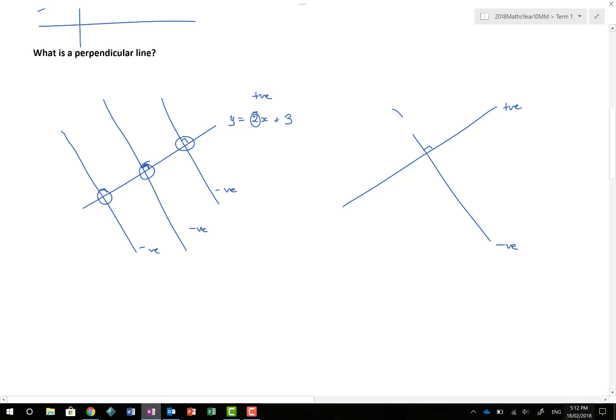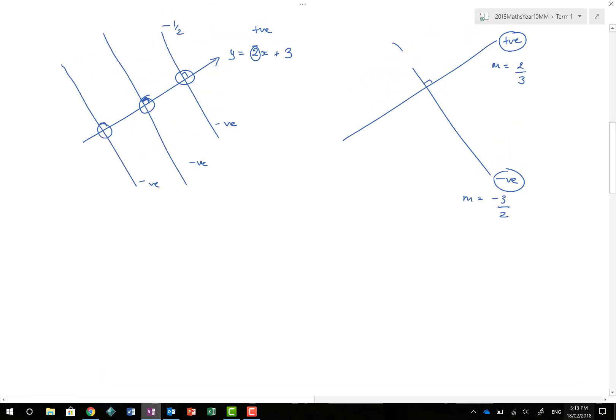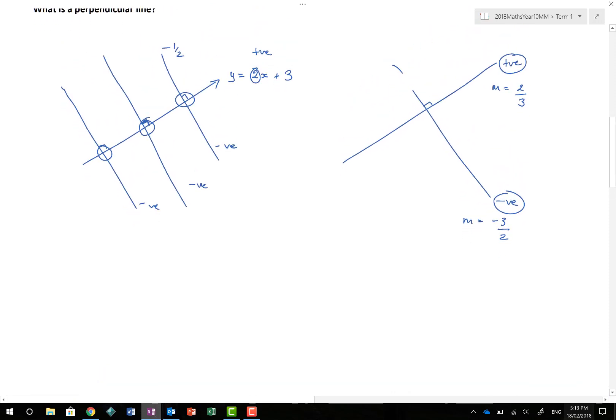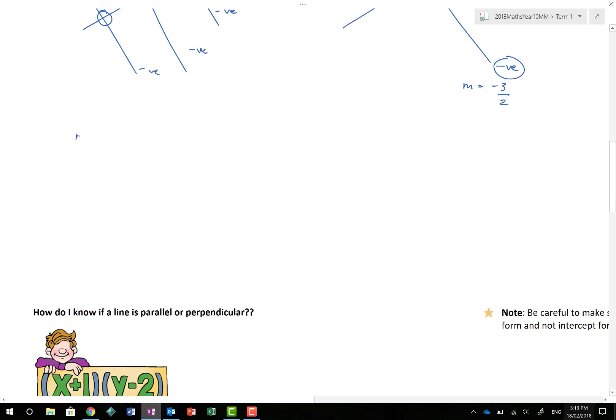If I know that this line has a gradient of 2, if it's perpendicular this gradient here is negative a half. If this gradient was minus 3 on 2, my perpendicular positive gradient would actually be 2 on 3. If I have a gradient equal to 1 fifth, the perpendicular gradient will be minus 5 on 1, which we'd write as minus 5.